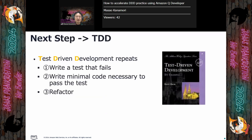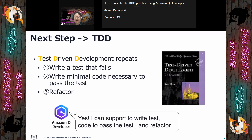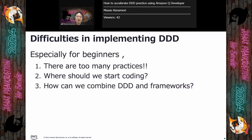As a next step, I recommend using TDD — test-driven development. Of course, Amazon Q Developer can also support you here. So we have now resolved the first and second difficulties.